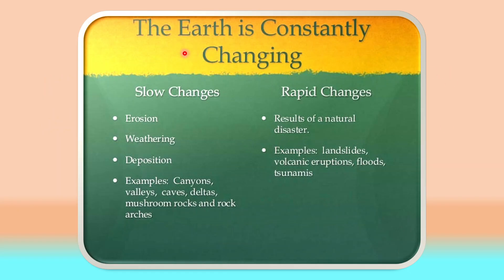Here we can see how the earth is changing constantly. The slow changes include erosion, weathering, and deposition, and they result in landforms like canyons, valleys, caves, deltas, mushroom rocks, and other rock arches. These are very slow changes and we are not able to see them during our lifetime.